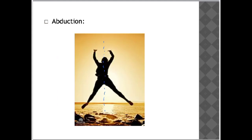Abduction is the moving of a limb away from the midline of the body. You can see a midline drawn down through this athlete in the air. The person's legs have moved away from the midline of the body, so what you can see here is hip abduction.